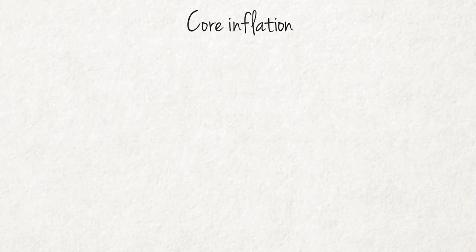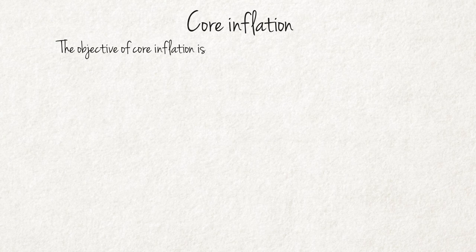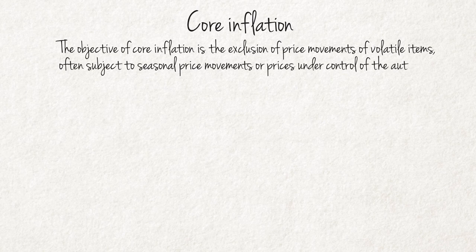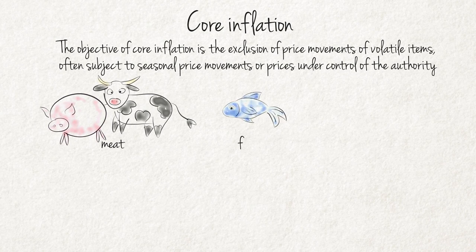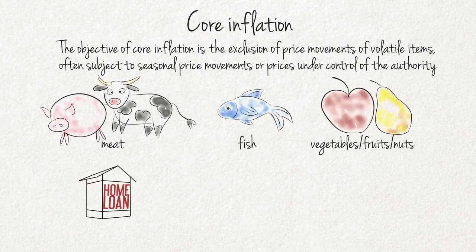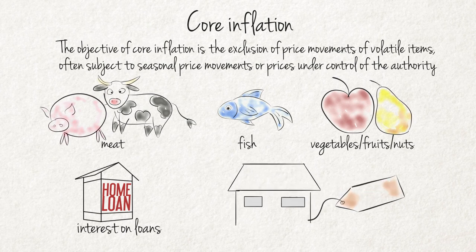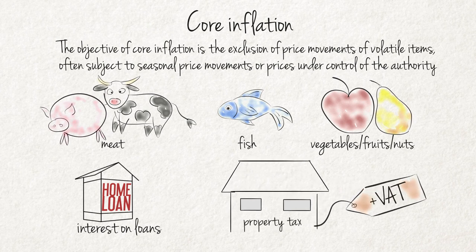Core Inflation. The objective of core inflation is the exclusion of price movements of volatile items, often subject to seasonal price movements or prices under the control of the authority. Core inflation excludes foods such as meat, fish, vegetables, fruit and nuts, as well as interest on loans and changes in the rates of value added and property tax.